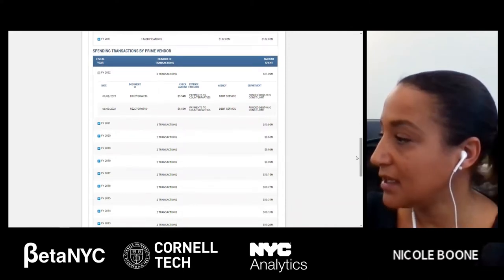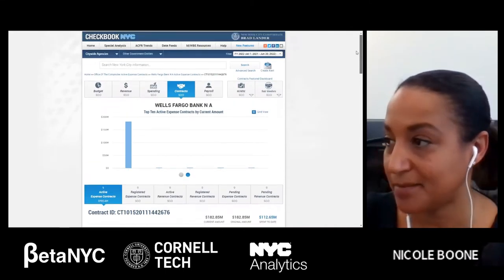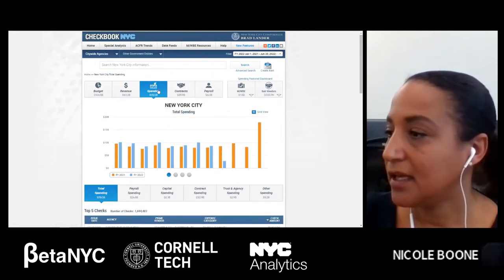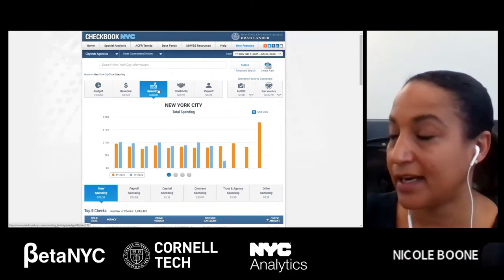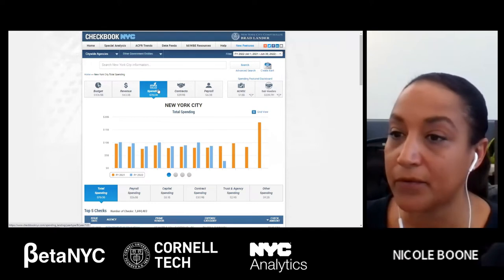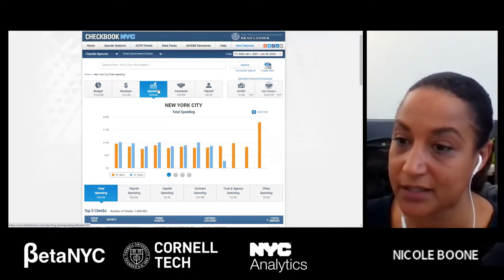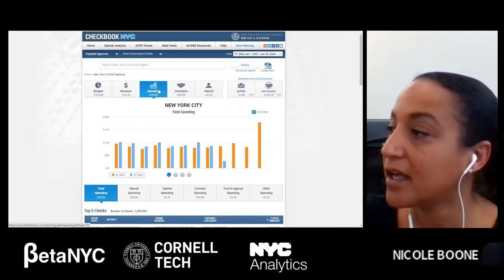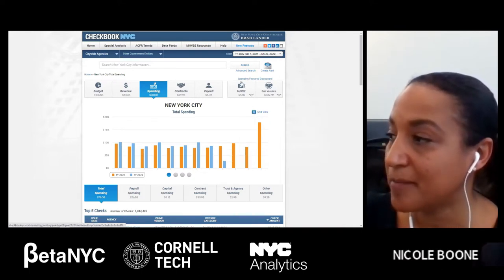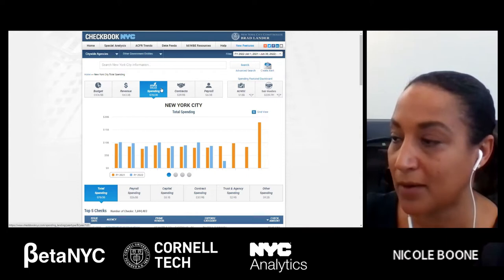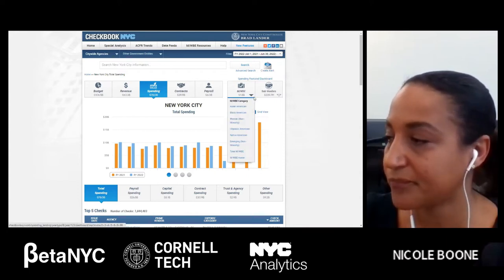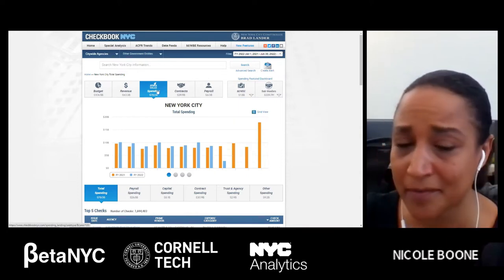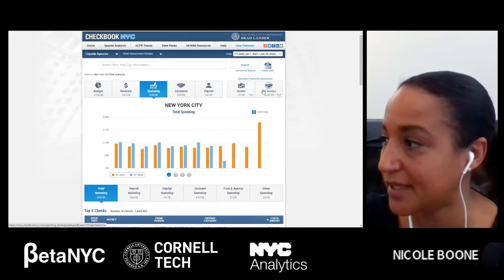Let me take us back up to the top — I'm going to hit the home button. We're back in the spending domain and I'm going to show how the feature dashboards interact with the spending and contracts domain. This is the spending feature dashboard. We know we're in the spending domain because the blue is all lit up.